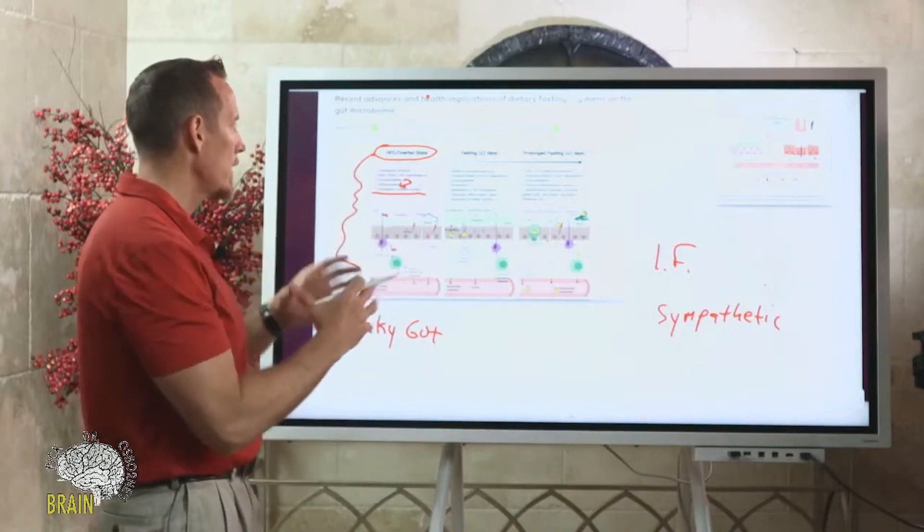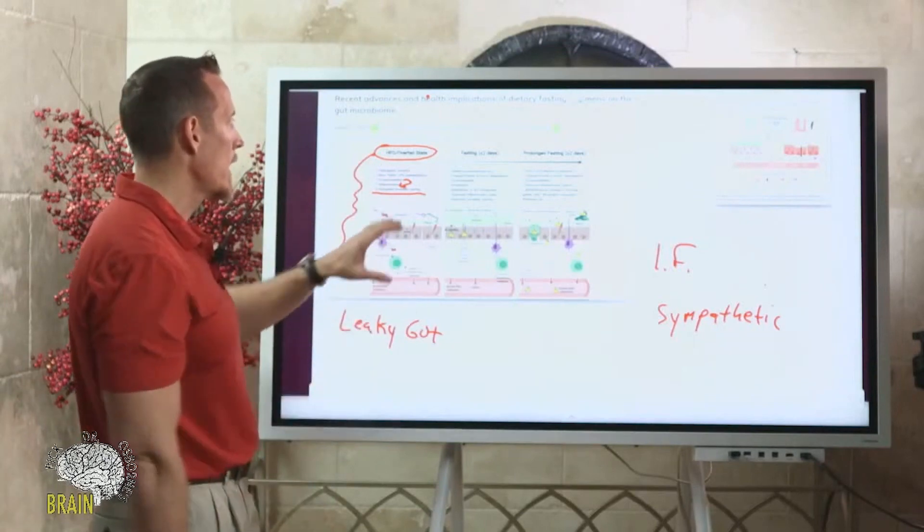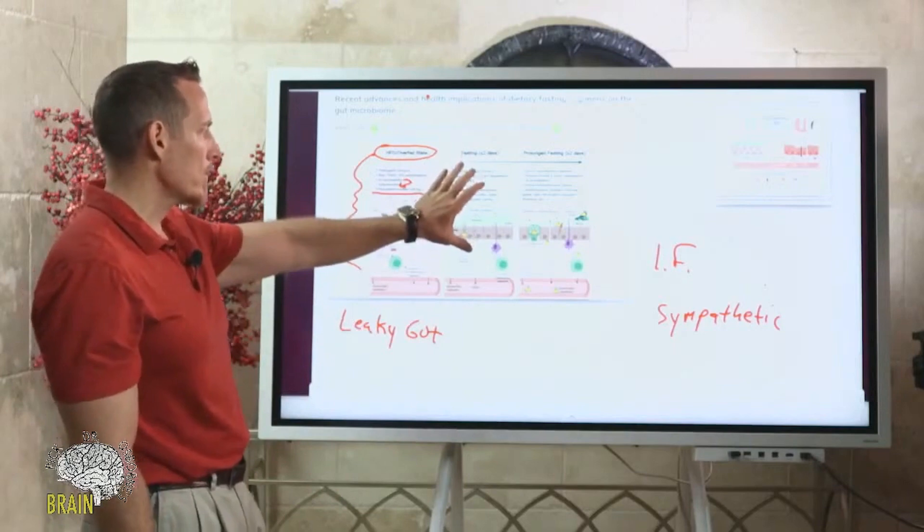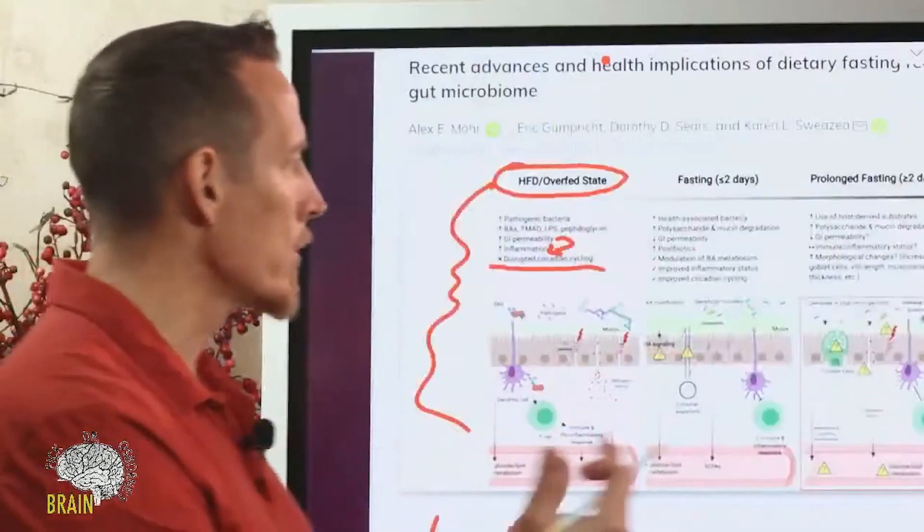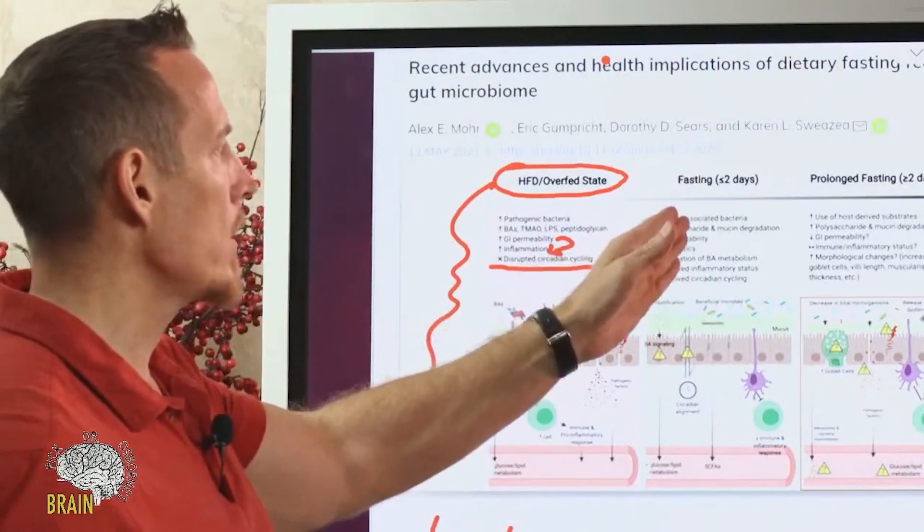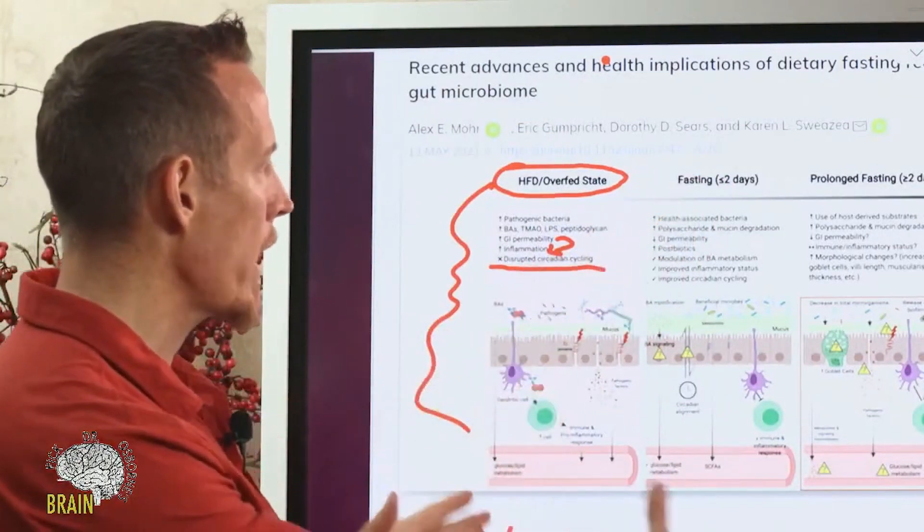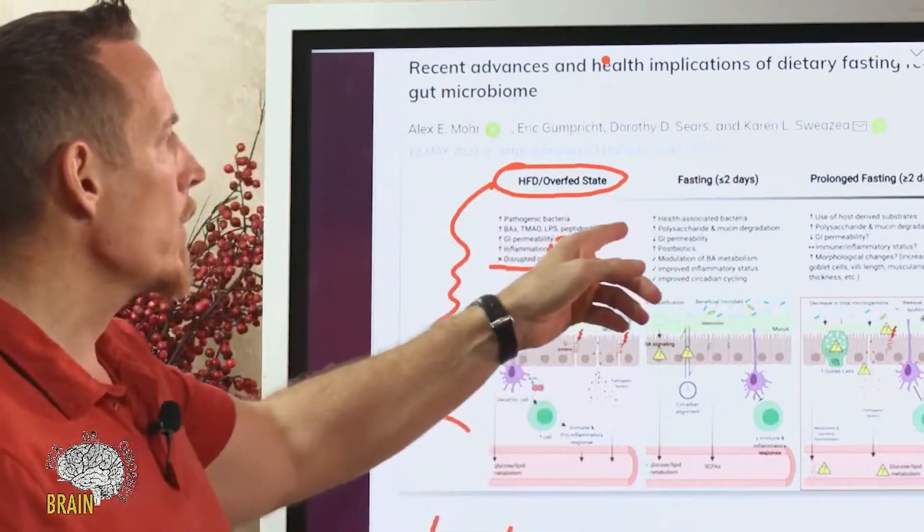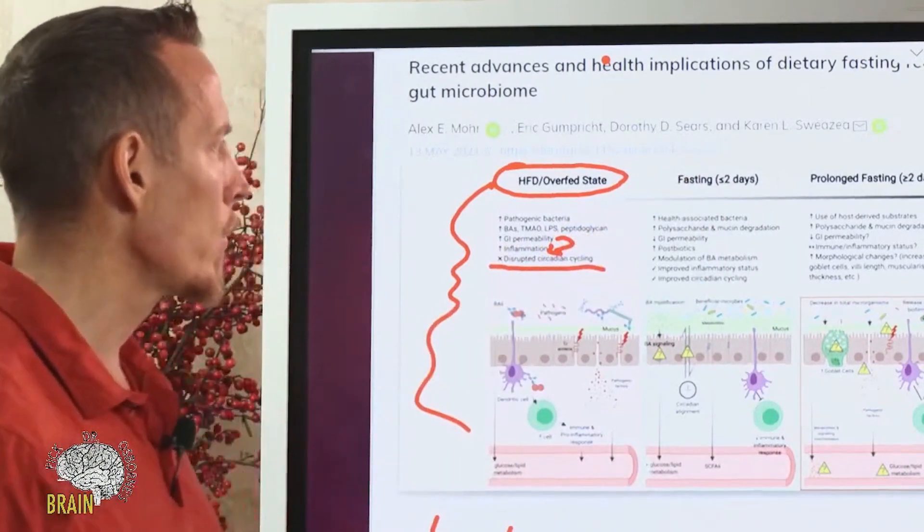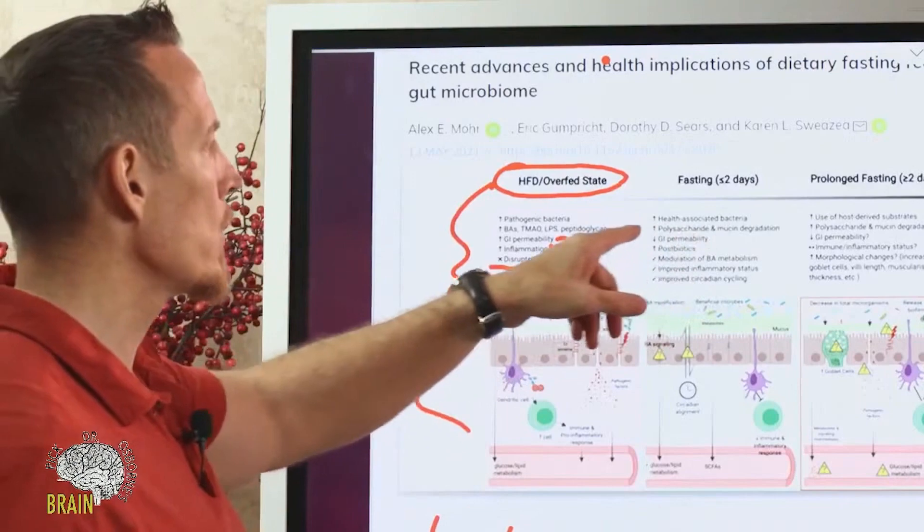Sleeping and fasting go hand in hand. Now here's what happens if you're fasting for less than two days. If you're fasting under two days, let's say 48 hours, we know that it increases certain kinds of bacteria that are associated with better health. We know that it increases your ability to produce mucin.